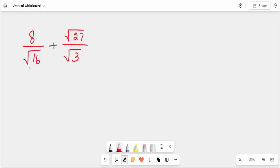8 divided by square root of 16 plus square root of 27 divided by square root of 3. Simplify this.